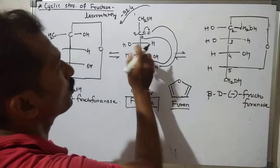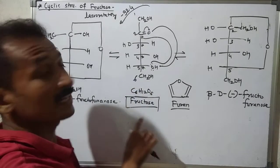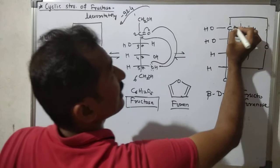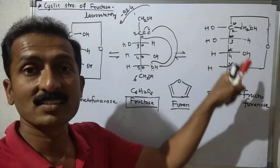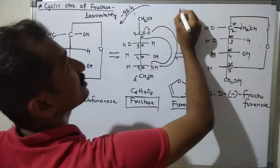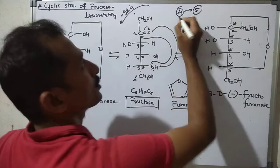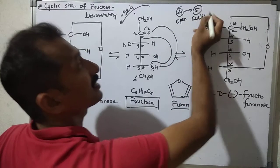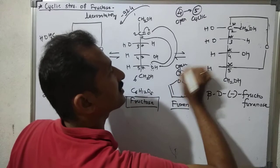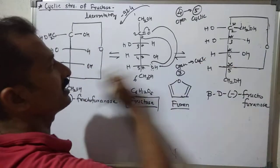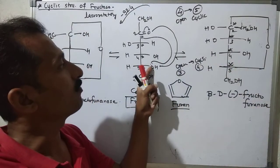In the open chain structure of fructose, there are three chiral centers. After cyclization, one additional chiral center is created at the anomeric carbon — so the cyclic structure of fructose has four chiral centers. Similarly, glucose had four chiral centers in open chain and gains one more in its cyclic structure, giving five chiral centers.